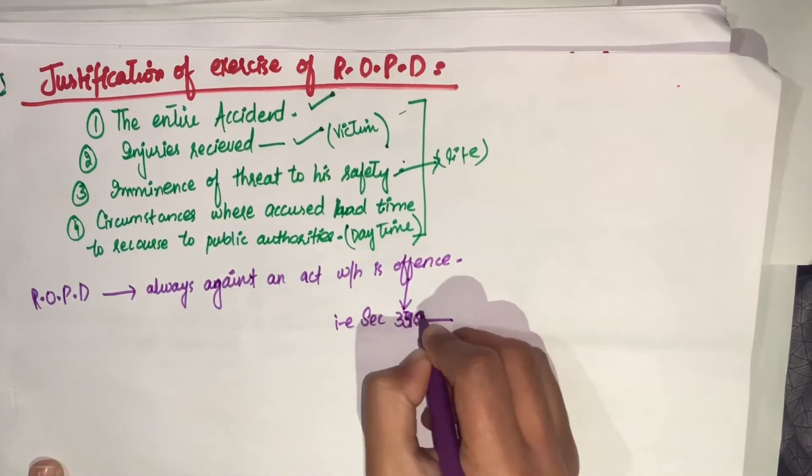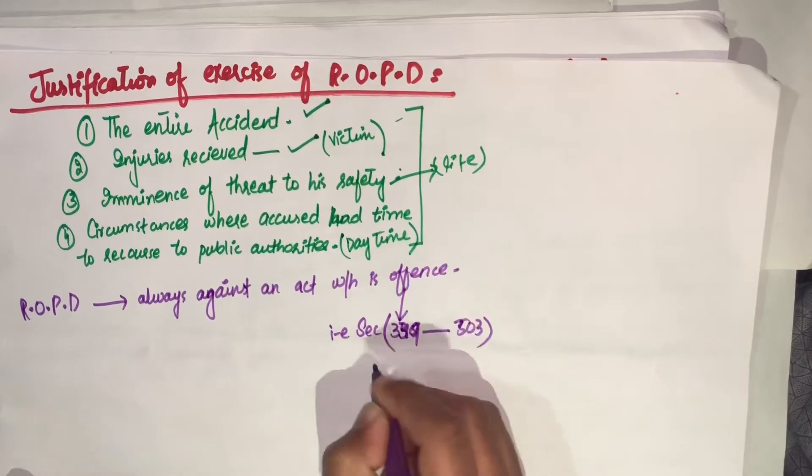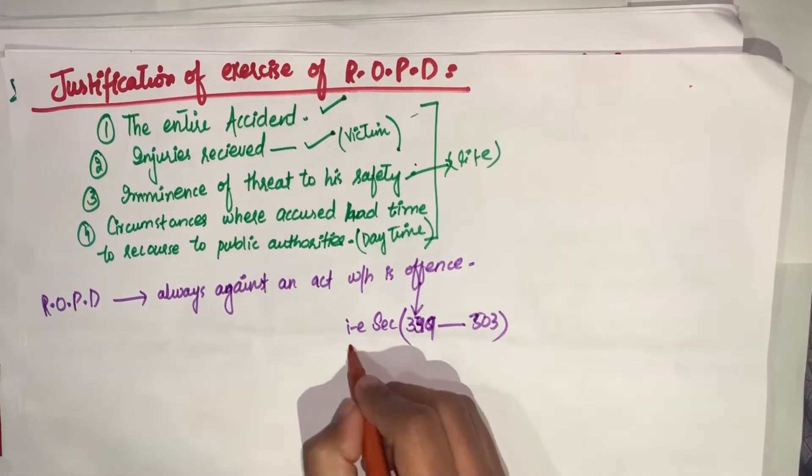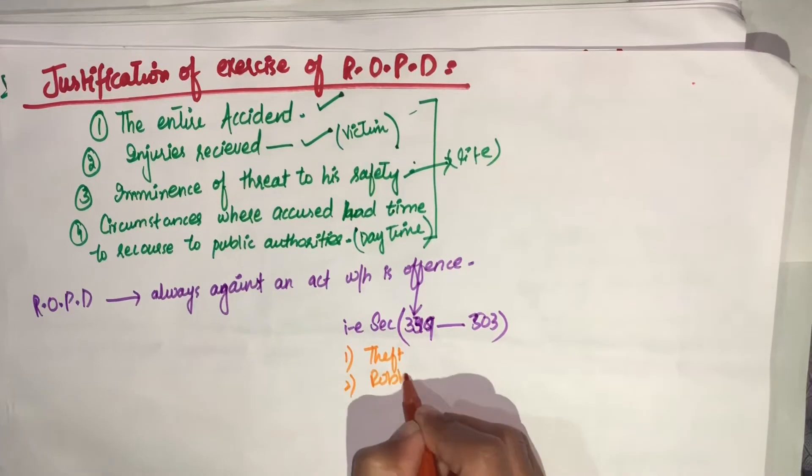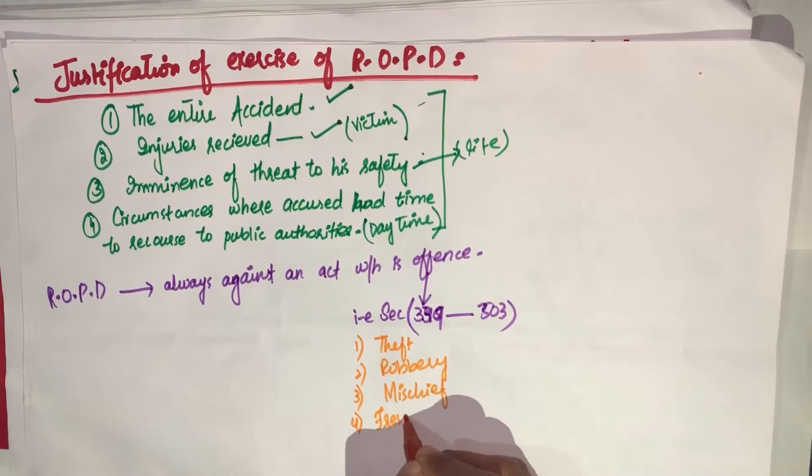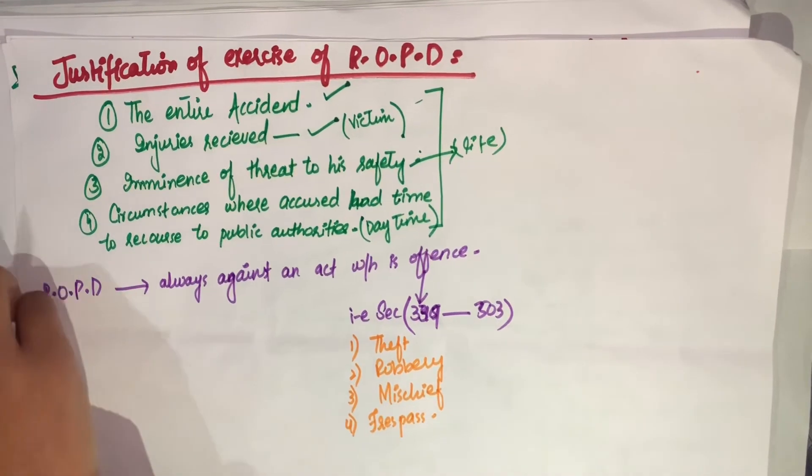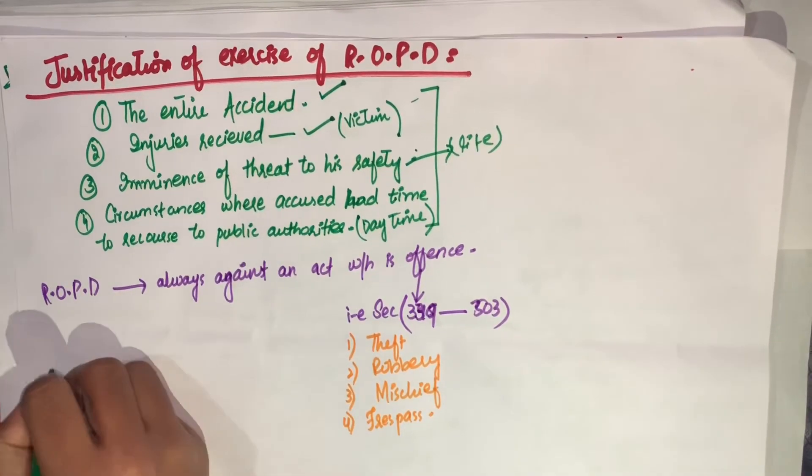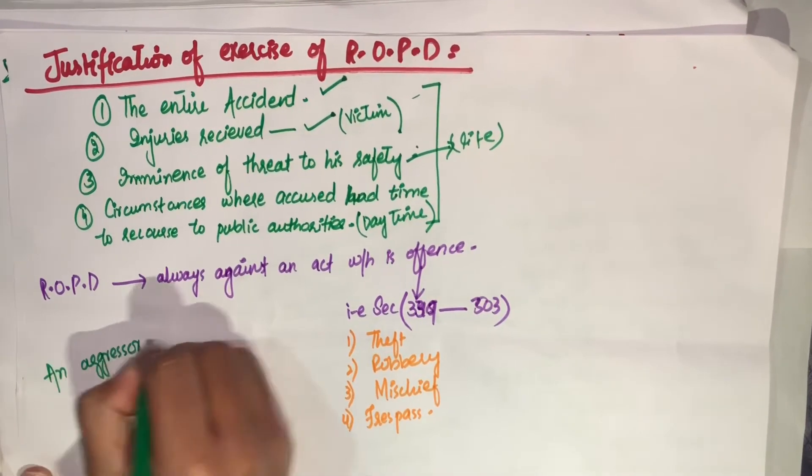Always remember, right of private defense is always against an act which falls under the definition of an offense. हम right of private defense सिर्फ वहीं exercise करेंगे जहां पे कोई offense commit हो रहा हो. For example: theft, robbery, mischief, trespass.